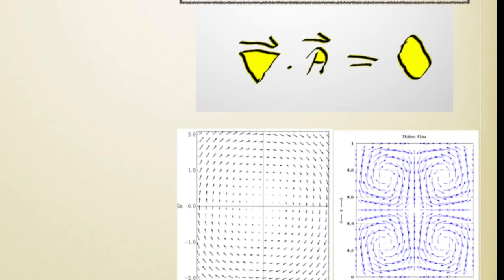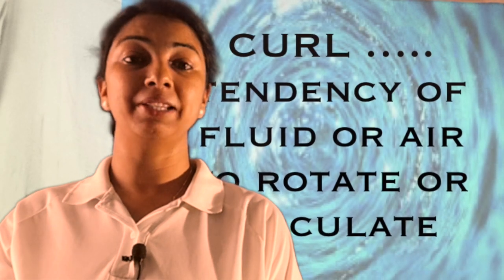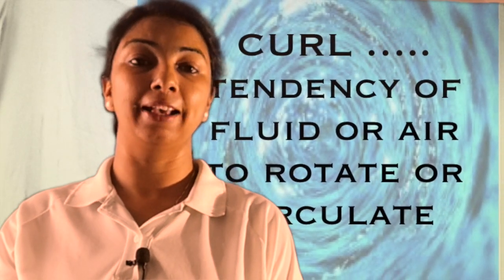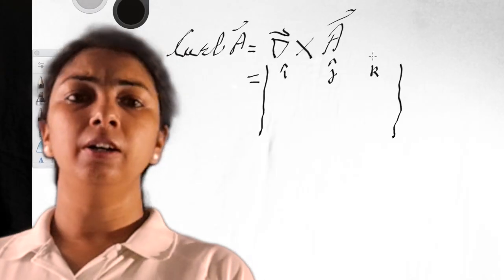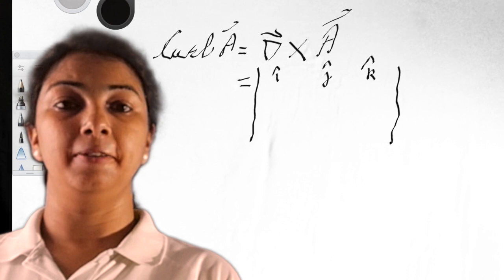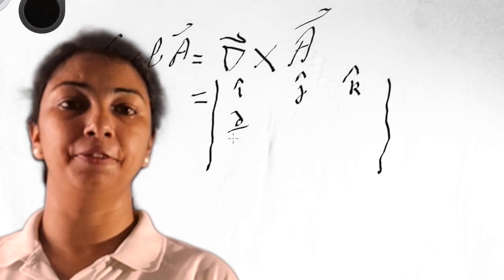Whereas curl measures the tendency of fluid or gas to rotate or circulate around that point. Curl of a vector field can be obtained by the cross product of del operator and vector field.